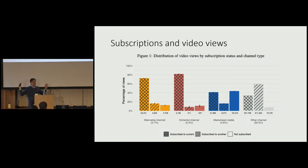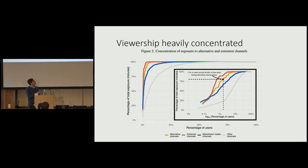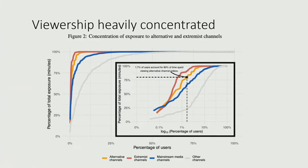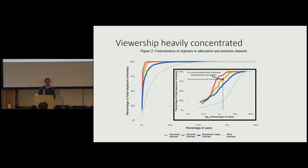The data shows that the majority of consumption of alternative and extremist content is concentrated in a small set of super-consumers. It takes a very small percentage of the user base to account for 75-plus percent of the consumption. This concentration is much more dramatic for alternative and extremist types of content than for other content types.